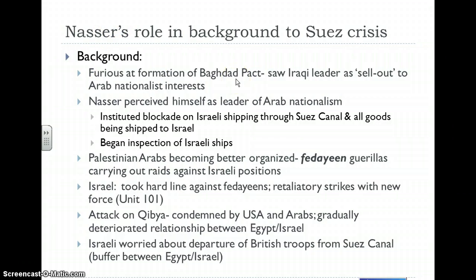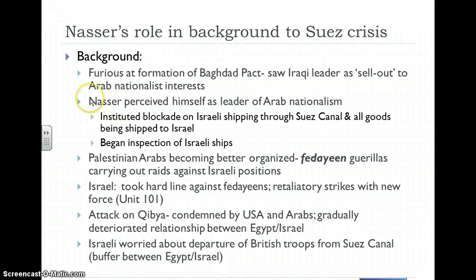When the Baghdad Pact was signed in 1955 — just the year after Nasser came to power — it infuriated him. He was very upset at specifically Iraq's leader, a man by the name of Nouri al-Said. He saw this man as a sellout to Arab nationalism and was furious that the interests he was trying to promote for the Arab world were being threatened. Nasser saw himself as the leader of Arab nationalism and didn't want any Arab countries making agreements with Western or potentially colonial powers.